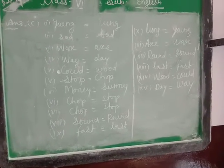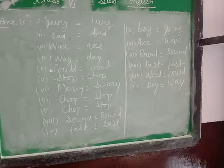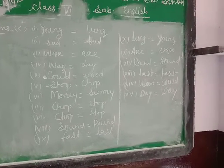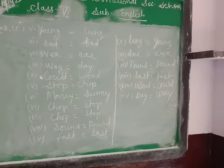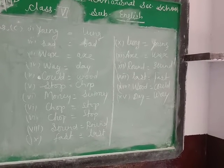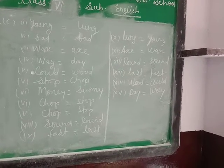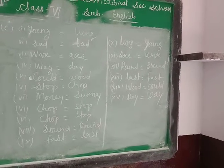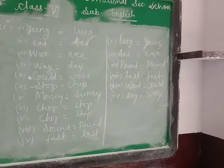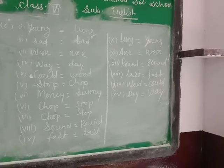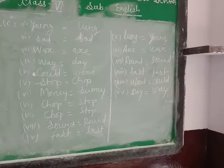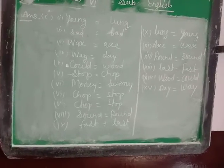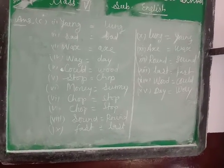The rhyming word pairs are: young–long, sad–bad, wax–ex, wet–day, cold–world, stop–chop, money–sunny, round–sound, fast–last. These are the correct answers for question C. These words share the same rhyme at the end: young, wax, round, sound, last, fast, word, cold, day — and that completes the rhyming pairs exercise.